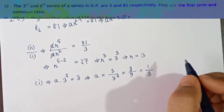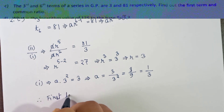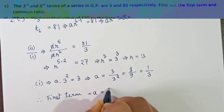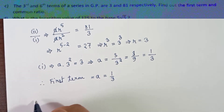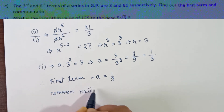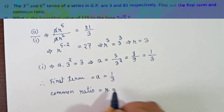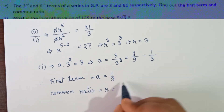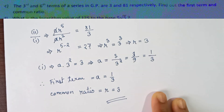So we have found that the first term a = 1/3 and the common ratio r = 3. This is the solution.